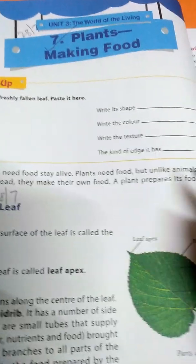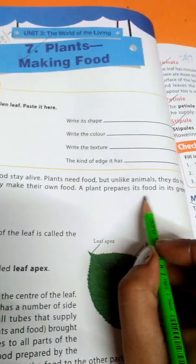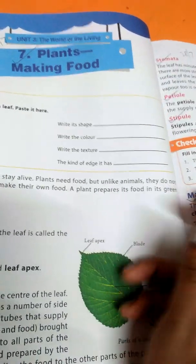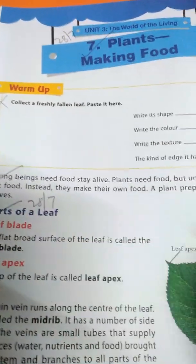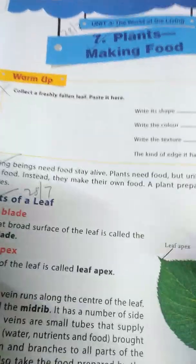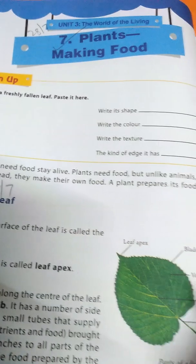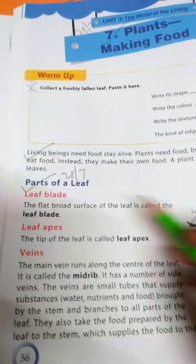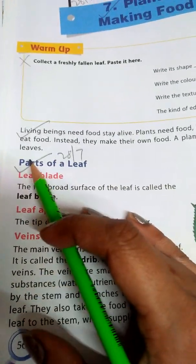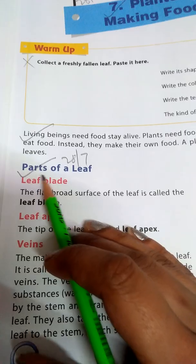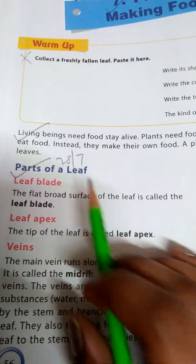A plant prepares its food in its green leaves. So where do they prepare their food? They prepare their food in their leaves. First of all, we are going to read about the parts of a leaf.